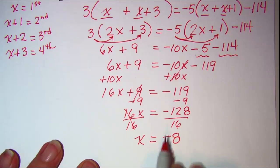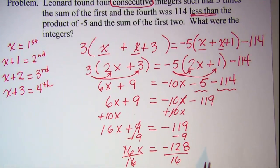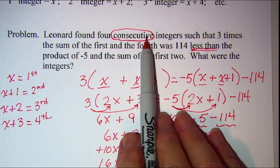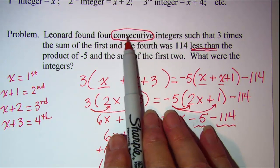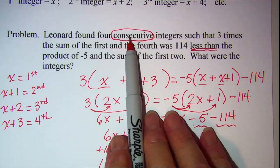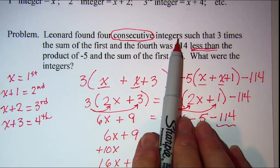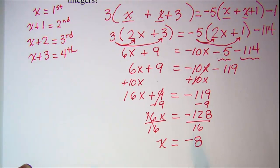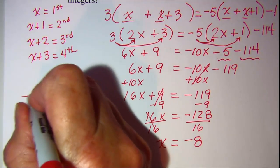Now let's check and make sure that having a negative is okay. It doesn't say anything about requiring that they're positive. It just says that there are four consecutive integers. And negative 8 is an integer. So my first integer is negative 8.